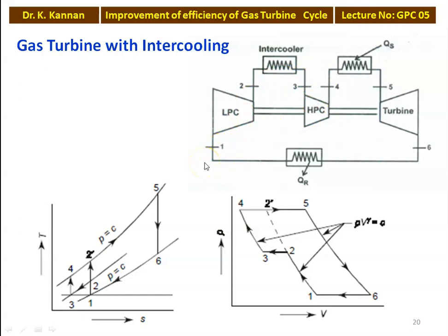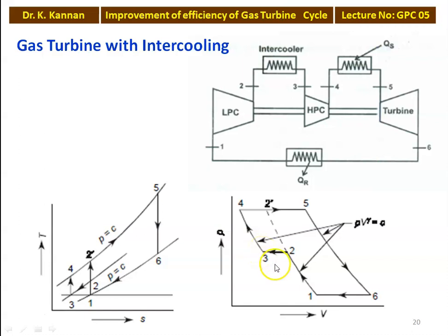For perfect intercooling, T1 equals T3 — the inlet temperatures of both the LP compressor and the HP compressor are equal. The intercooler must be designed so that its outlet temperature equals the inlet temperature of the low pressure compressor. The cycle with intercooling is described by the PV and temperature-entropy diagrams: 1 to 2 is isentropic compression, 2 to 3 is constant pressure heat removal in the intercooler, 3 to 4 is isentropic compression again, 4 to 5 is heat addition in the heat exchanger, 5 to 6 is expansion in the gas turbine, and 6 to 1 is heat removal in the heat exchanger.